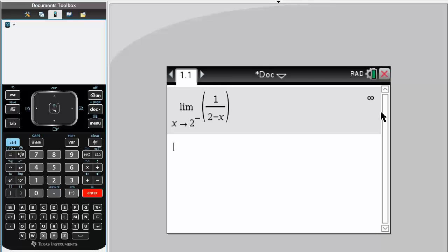We'll get infinity. See, we're plugging in 1.999, so our bottom term is a very, very small positive number.